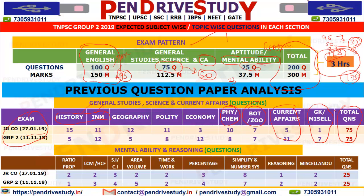Next, in the 25 questions of Mental Ability and Reasoning, the topics are split up: Ratio and Proportion, LCM and HCF, Simple Interest and Compound Interest, Area and Volume, Time and Work, Percentage, Simplification, and Number System. Note: the full Number System syllabus and Simplification are not required for TNPSC. We are focusing on LCM, Ratio, Time and Work, and Percentage.